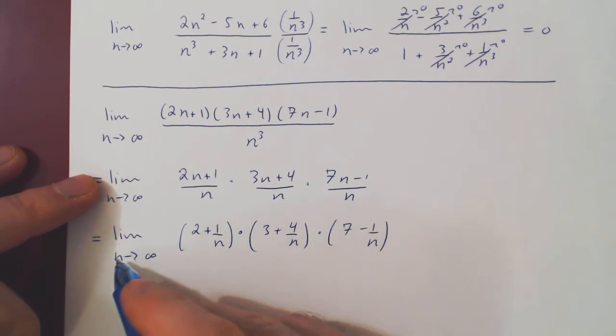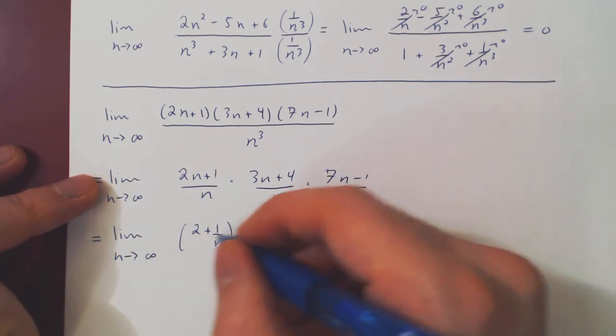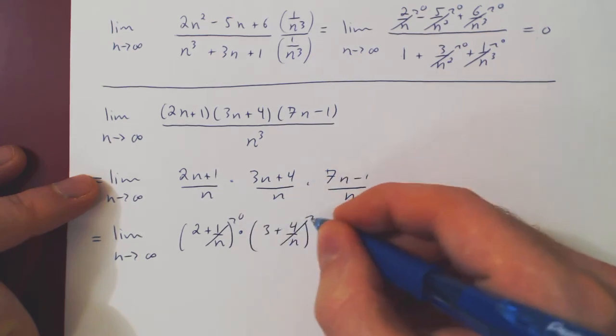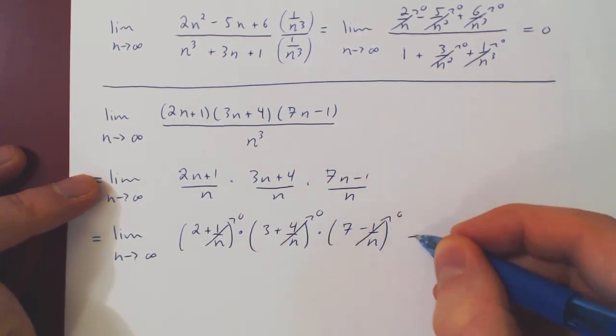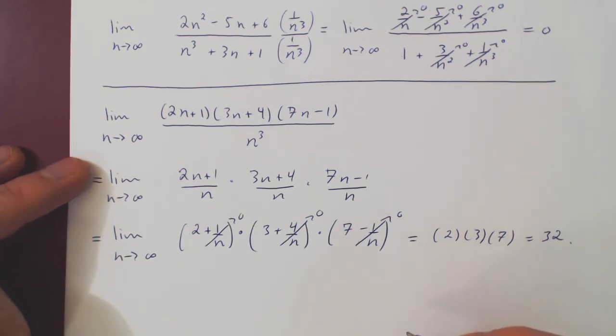So here you'll have 2 plus 1 over n times 3 plus 4 over n times 7 minus 1 over n. And now the limit is trivial. So as n goes to infinity, 1 over n goes to 0, so that's 4 over n. And we're left with 2 times 3 times 7, which of course is 42. My bad. And there you go.